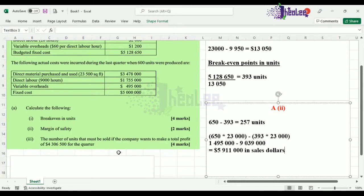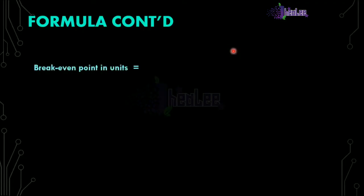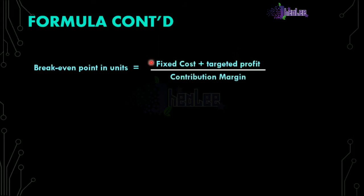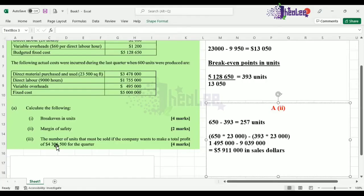We're going to look at the formula for calculating that. The break-even points in units is equal to fixed cost plus targeted profit, divided by contribution margin. This is similar to calculating break-even points in units — you just add your targeted profit to your fixed cost and divide by contribution margin. We have already ascertained the contribution margin, which is selling price minus variable cost.